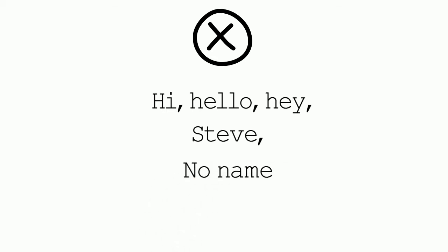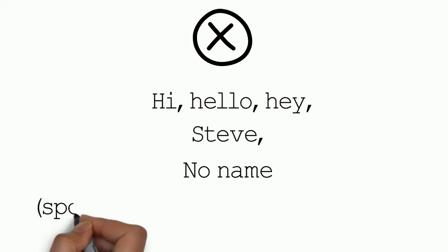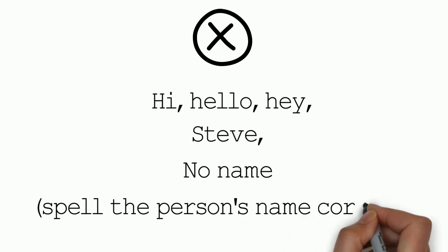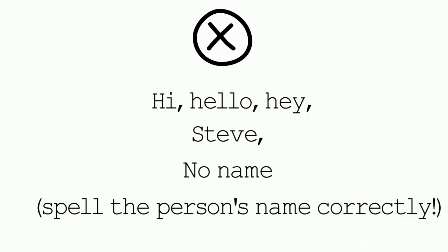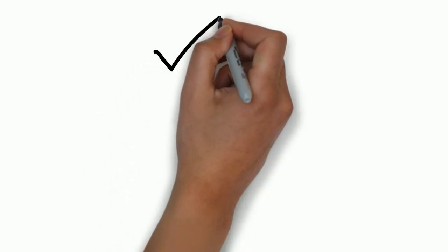Using no name at all is even worse — that is very disrespectful and should be totally avoided. How would you feel if someone didn't say your name? And even worse, the biggest crime ever is to spell somebody's name incorrectly. There are no excuses — look on LinkedIn, look at their email address, look at how they've written it, and get it right.